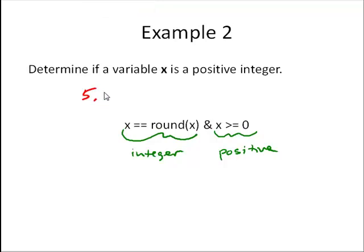We can try some values. For 5.3, is x equal to round x? No, false. Is x greater than or equal to 0? Yes, true. Are these two both equal to 1? That's what the AND is asking. No, that's false.